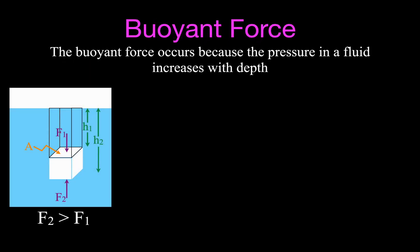Now we're going to derive the equation for the buoyancy force. The buoyancy force occurs because pressure increases with depth within a fluid. Here we have a rectangular object; its surfaces have an area. The force at the bottom is greater than the force at the top due to the difference in height — the top surface is at h1 and the bottom is at h2, where h2 is greater than h1. So the buoyant force equals the force at the bottom minus the force at the top.